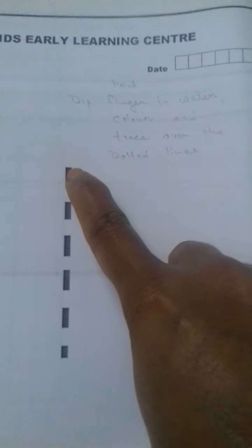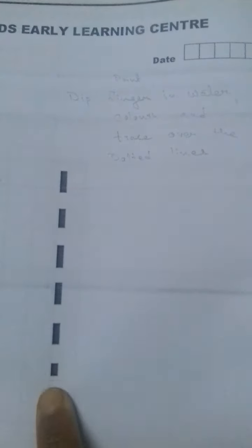Then comes seed pasting activity—you can paste tamarind seeds. And here it is trace on the dotted number. Here you can ask the child, or you can dip the child's finger in water colors and you can trace on the dotted numbers and say it is number one.